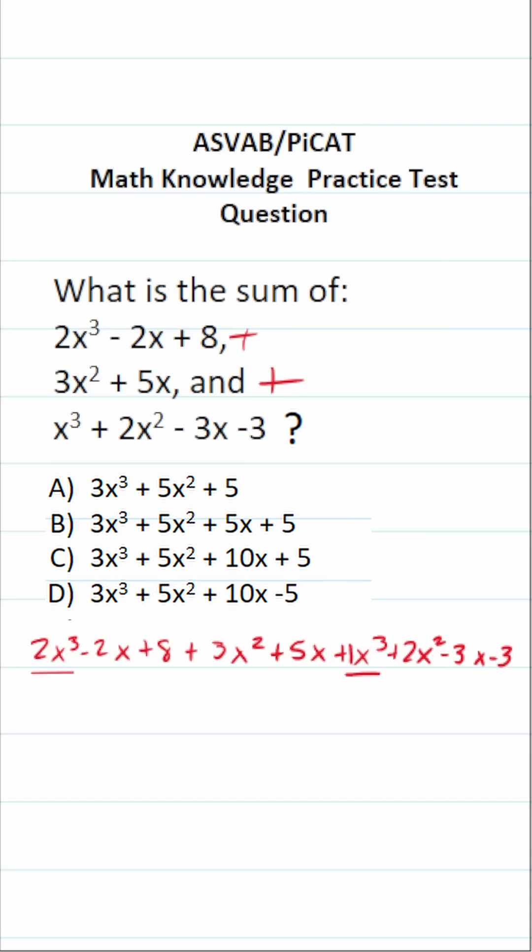2x³ + 1x³ is going to be 3x³. Now that I've combined those, I like to cross them out just to make it a little bit easier.